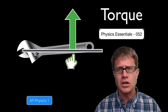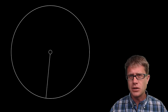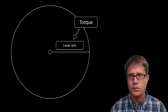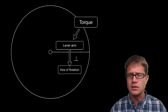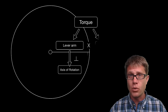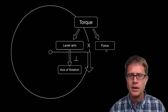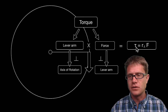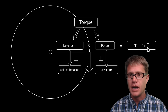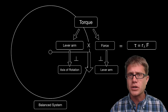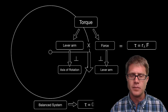Torque involves two things, and the units are not just newtons — they are newton meters. In a rotational system with an axis of rotation, torque is the product of the lever arm (a vector perpendicular to the axis of rotation) times the force, which must be perpendicular to that lever arm. The equation is: Tau (torque) equals R-perpendicular times F. If a rotational system is not moving, all the torques must be balanced, so the net torque on a balanced system is equal to zero.